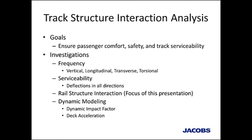For a standard roadway bridge, we can analyze the bridge in a bubble — once the trucks leave the approach slab, it's not our problem. For a rail bridge, we don't get to make that assumption. The continuous rail running across the bridge introduces an integral relationship between the bridge and the embankment. To better understand that relationship, we have track structure interaction. TSI is a catch-all term for a whole suite of analyses that help ensure the bridge won't have a negative effect on the track. Our goal is to ensure passenger comfort, safety, and track serviceability.